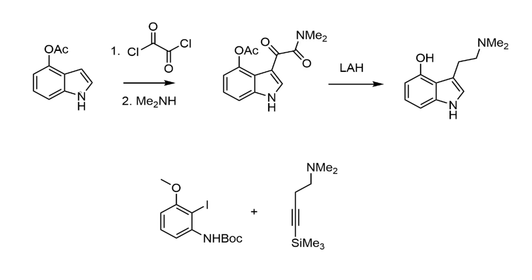A common and classical way to synthesize tryptamine derivatives is the reaction of an indole with oxalyl chloride. The indole ring picks up one of the acid chloride moieties, then the remaining acid chloride is reacted with an amine such as dimethylamine, affording a diketone intermediate. The hydroxy group has to be protected, for example as an acetate, during the acid chloride coupling step. Then quite drastic reducing conditions — typically refluxing with lithium aluminium hydride — are required to reduce the pair of carbonyls to the tryptamine side chain, while simultaneously removing the acetate protecting group.